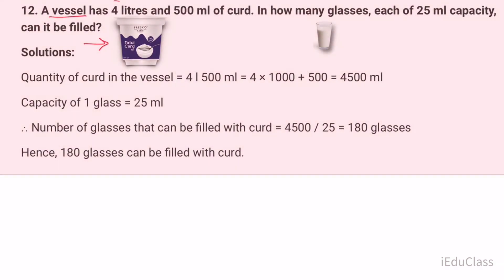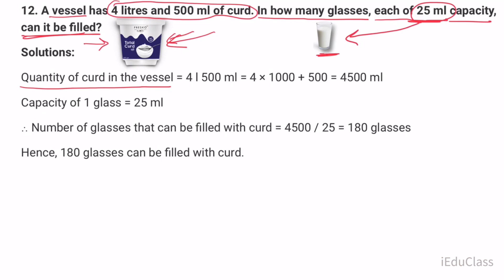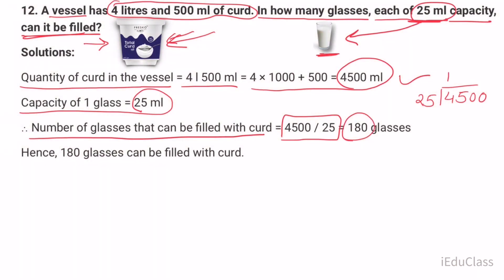Question twelve: A vessel has 4 liters 500 milliliters of curd. In how many glasses, each of 25 milliliter capacity, can it be filled? Solution: Quantity of curd in the vessel is 4 liters 500 milliliters equals 4500 milliliters. Each glass capacity is 25 milliliters. Number of glasses that can be filled is 4500 divided by 25 equals 180 glasses.